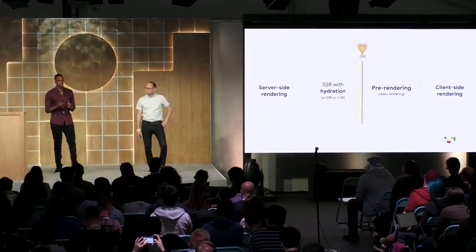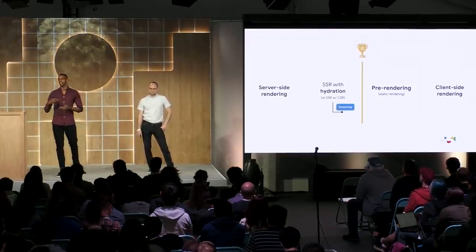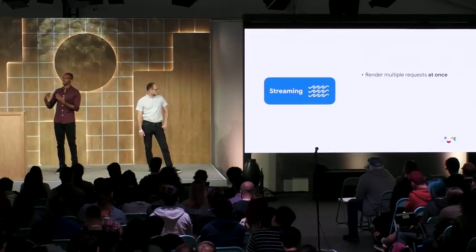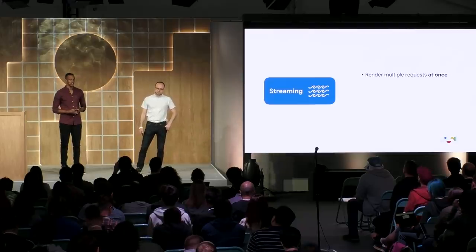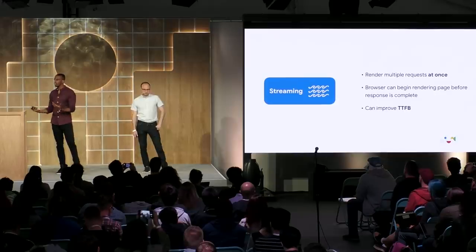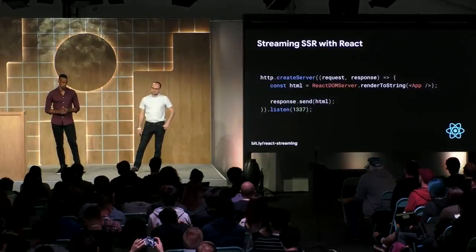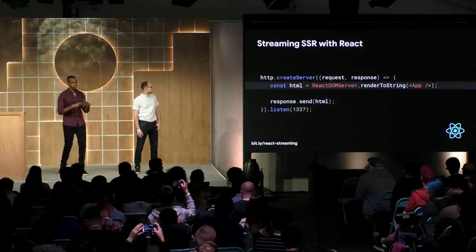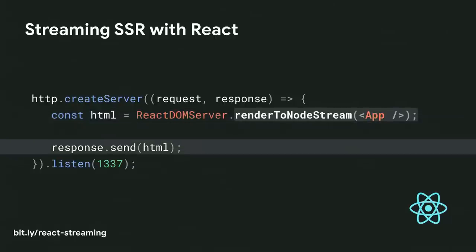We've talked about how we can think of these different rendering approaches as a spectrum. The sweet spot lives right in the middle, and there have been newer approaches coming out that can help us get there — one of them being streaming server-side rendering. The idea behind streaming server-side rendering is that we can render multiple requests at once and send down content in chunks as they get generated. This means we don't have to wait for the full string of HTML before sending content to the browser, and doing this can improve our time to first byte. Frameworks like React already provide an API to make streaming possible. Instead of using the render-to-string method, you can switch to render-to-node-stream, which lets you pipe the response and send HTML down in chunks. We can do the same with Vue Server Renderer by switching to render-to-stream.